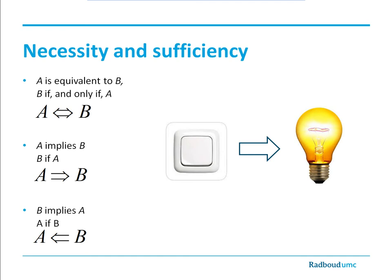Now that we've covered these terms, we can dive into the concept of necessity and sufficiency. Starting at the top, A is equivalent to B, or 'B if and only if A,' indicated by a double-headed arrow. B if and only if A means that A is a necessary and sufficient cause for B. B can occur only if A is there — the light comes on only if the light switch is flipped to on. And if the switch is off, the light has to be off. This means the light switch is a necessary and sufficient cause for the light bulb to come on.